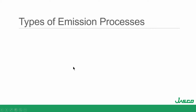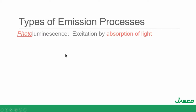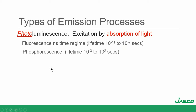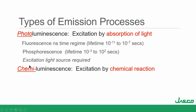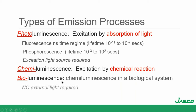In terms of the types of emission processes, there are basically three. Photoluminescence includes fluorescence and phosphorescence — fluorescence being on more of a nanosecond timeframe, phosphorescence much longer-lived in the millisecond to hundreds of seconds and even longer. An excitation light source is required for photoluminescence. Chemiluminescence, on the other hand, is excited by a chemical reaction, so even in bioluminescence no external light is required — the chemical reaction produces energy that excites the molecule.